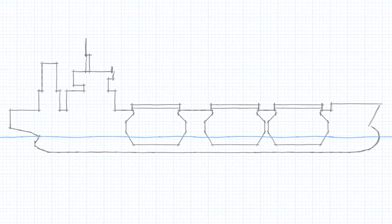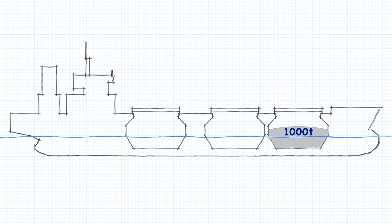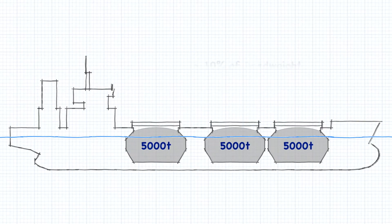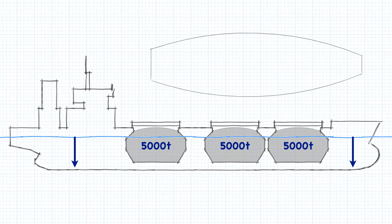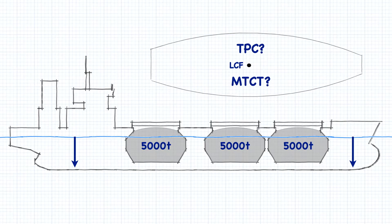But using the tons per centimeter immersion to calculate the bodily sinkage only works when moderate amounts of weight are added to the ship. When we need to add larger amounts of weight, say more than 10% of the ship's dead weight, we can't use this exact method any longer. This is because as the ship sinks deeper, the area and shape of the vessel's waterplane is going to be changing, and so will the tons per centimeter immersion, the moment to change trim one centimeter, and the position of the center of flotation. These values were based on the drafts we started with and are no longer valid once you load this much cargo.